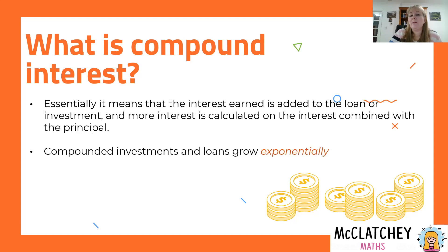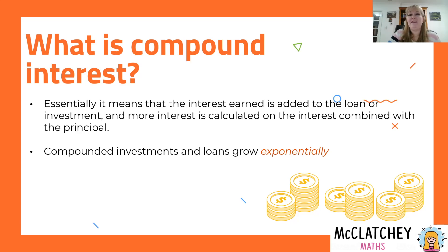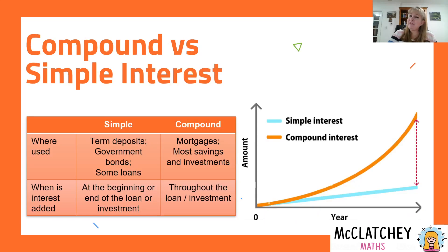What we see with compounded investments and loans is it grows exponentially, which means it isn't straight-line growth like simple interest. It grows and increases and speeds up as time goes by. In fact, Warren Buffett, one of the world's most famous investors, talked about the magic of compound interest because he attributes his success as an investor to interest making his money grow very fast.